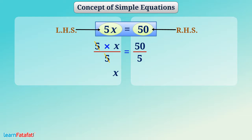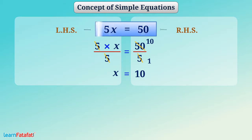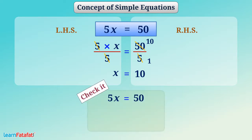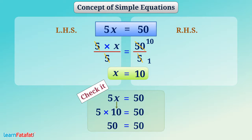Similarly, we divide 50 by 5 on the RHS, so we get 10 on that side. Therefore, x is equal to 10. That means when the value of x is 10, the equation will be satisfied. Let's check it: if we put x equal to 10 in the equation, then 5 multiplied by 10 will be 50, which is the same as RHS. Thus, we say that x equal to 10 is the solution of the equation.